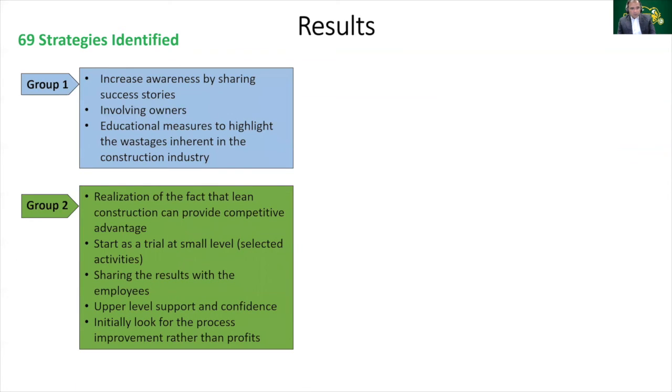Group two population should be informed regarding competitive advantage of lean constructed projects over projects which were undertaken using existing practices. This improvement abroad in terms of reduction in waste, defects, and improvement should be shown before giving any time and cost benefits. In order to improve the confidence on lean construction, it should be started as a trial and then measure for the improvements which should be shared among the employees. The companies should start implementing lean construction with the goals of the process improvements initially and then later on will witness the profits itself.